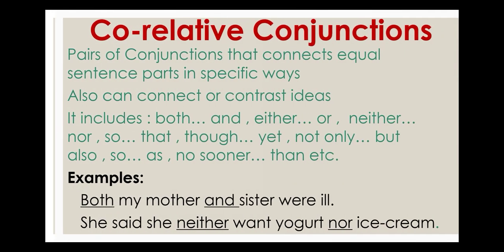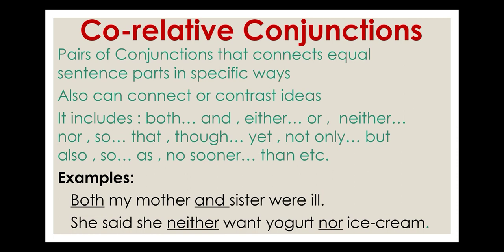The next type is correlative conjunctions. These connect equal sentence parts in specific ways and can also connect or contrast ideas. The most important point is that correlative conjunctions are always used in pairs. The pairs include: both...and, either...or, neither...nor, so...that, though...yet.